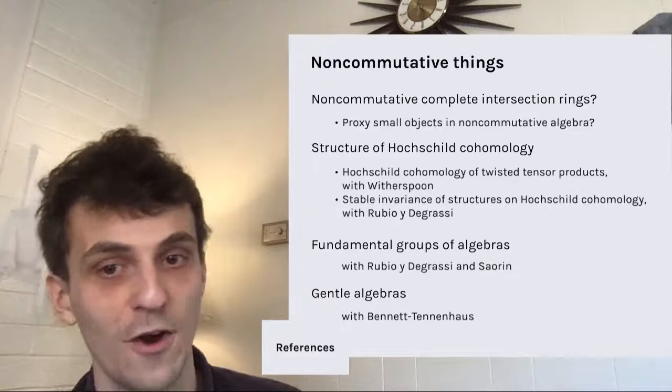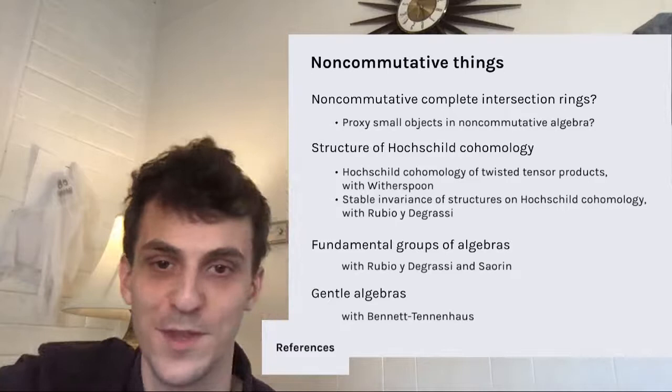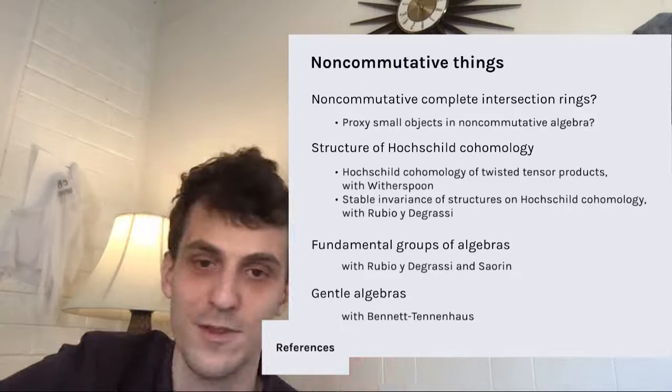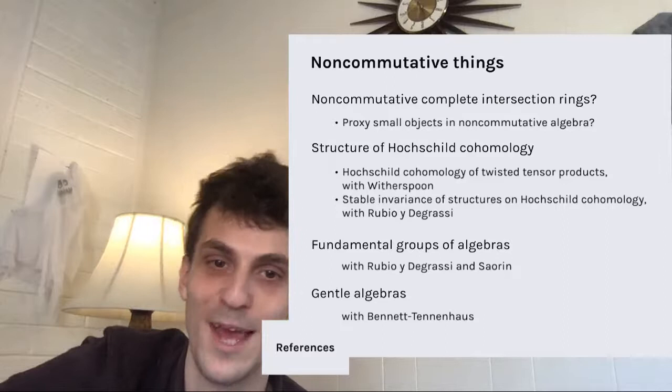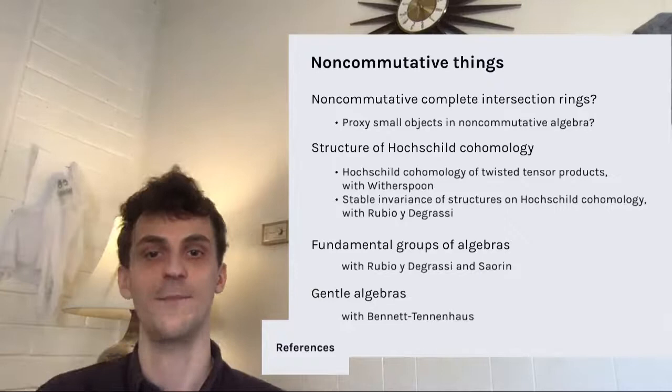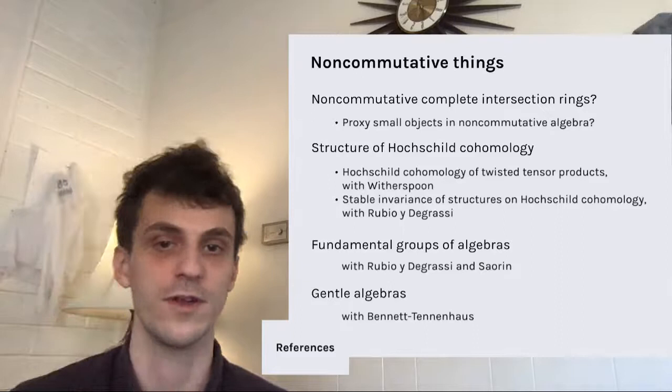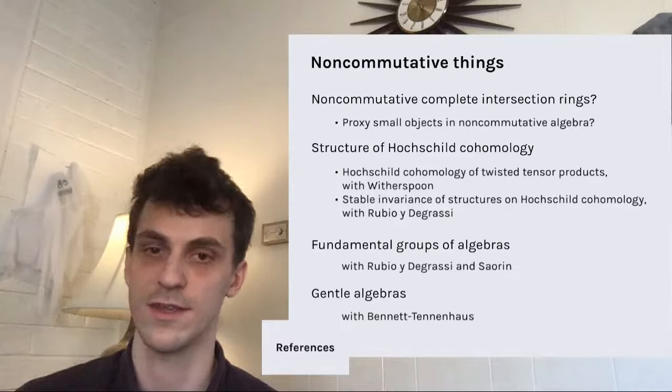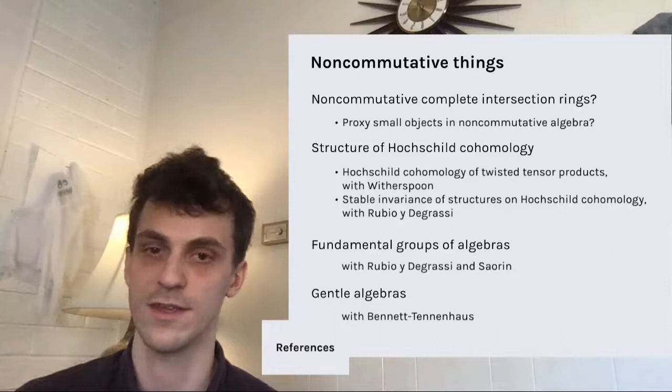I think a lot about Hochschild homology — probably more than anything else. I have projects on computing Hochschild homology with Sarah Witherspoon, and on stable invariance of certain structures on Hochschild homology with Rubén Sánchez-García. I also have a project on gentle algebras with Raphael Bennett-Tennenhouse. Gentle algebras, despite looking nothing like complete intersections, are definitely an example of non-commutative complete intersections — they display the same homological behavior and have a theory of cohomology operations. These are some of the papers I mentioned, and thanks — maybe I'll see you at the Champaign talk.